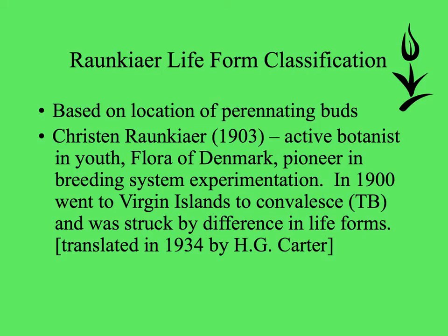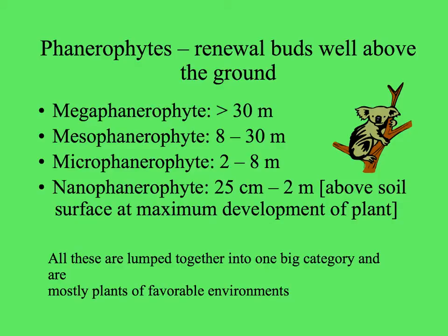The Danish botanist Christen Raunkiaer made a system of life form classification based on the location of the perennating buds. In 1900, he went to the Virgin Islands to convalesce from tuberculosis and was struck by the difference in life forms compared to his home in Denmark. The largest group were the large woody plants — the phanerophytes — with renewal buds well above the ground. Megaphanerophytes are very tall, more than 30 meters. Mesophanerophytes range from 8 to 30 meters. Microphanerophytes from 2 to 8 meters. And nanophanerophytes grow close to the surface, from 25 centimeters to 2 meters. All of these phanerophytes are mostly plants of favorable environments without freezing.